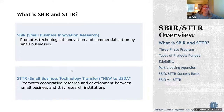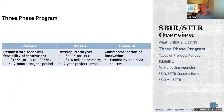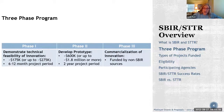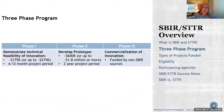Moving on to the three-phase program. SBIR and STTR typically start with Phase 1, go on to Phase 2, and finally Phase 3. Normally Phase 3 is not funded through the agency, with the exception of NASA and DOD, which might be your first customer. Most of the time you receive funding for Phase 1 and 2, but not Phase 3. That's where you should be at a point where you can get outside investors.